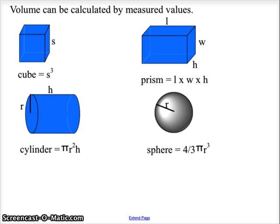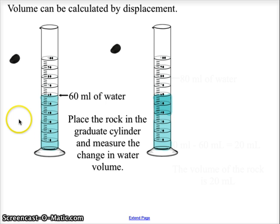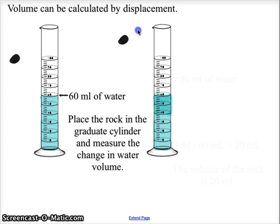But what happens when you get an object that doesn't have an even measure or isn't easy to measure? Then we use displacement. Here we have a pebble and a graduated cylinder filled to 60 milliliters. When we place the pebble into the cylinder, the water level will rise — that comes from Archimedes and his discovery that the king's crown was not truly gold. We'll learn more about that in physics next year.